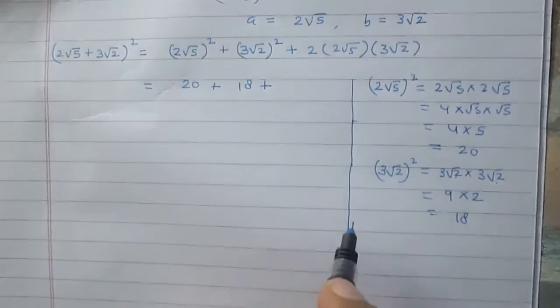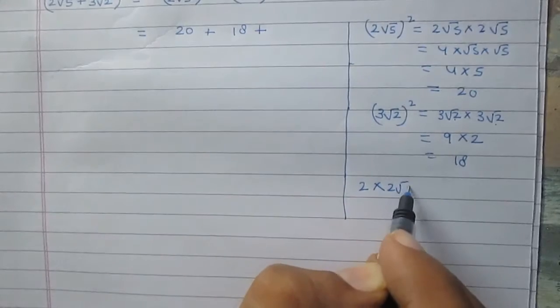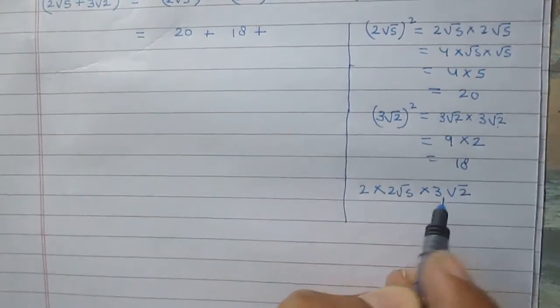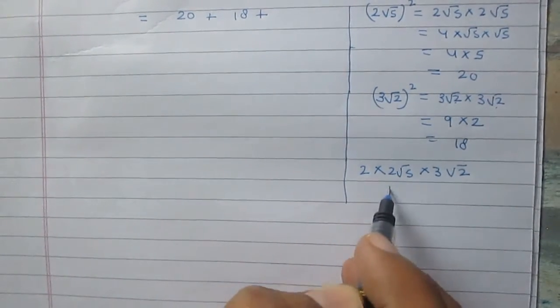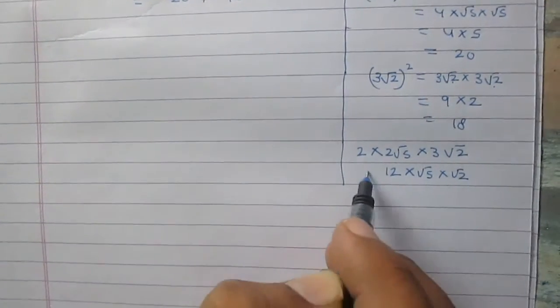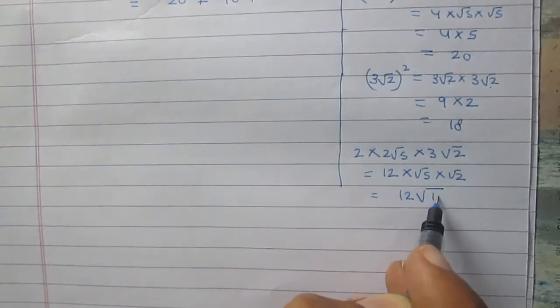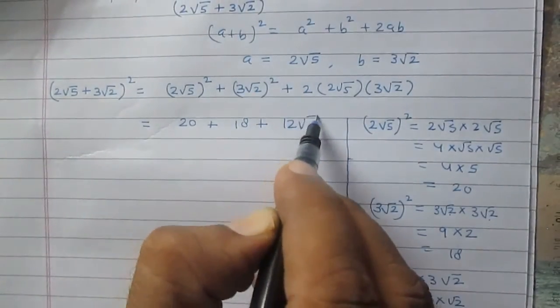Again, simplifying 2ab: 2 times 2√5 times 3√2. The numbers: 2 times 2 times 3 equals 12, and √5 times √2 equals √10. So 2ab equals 12√10.